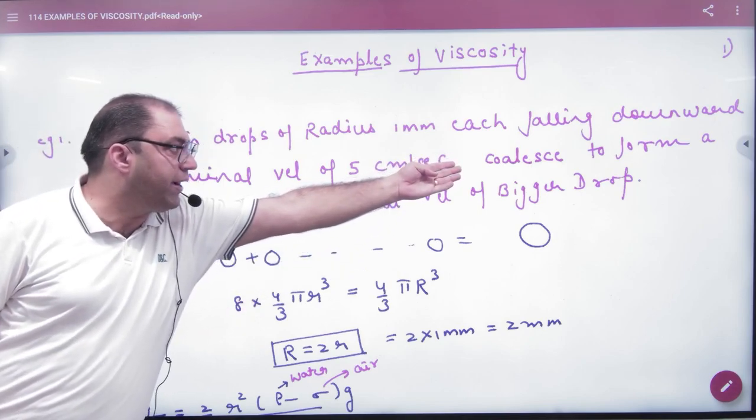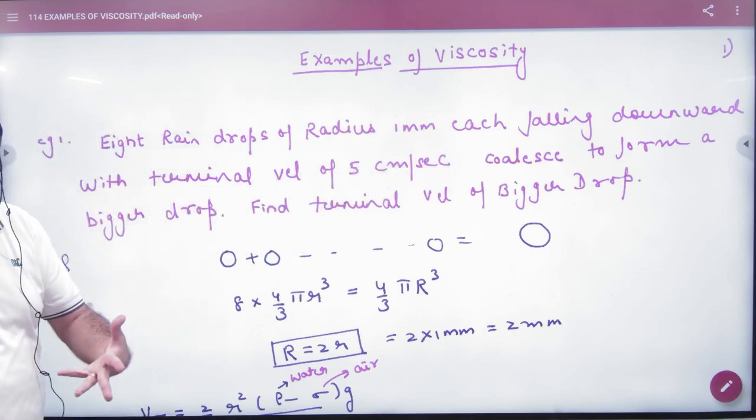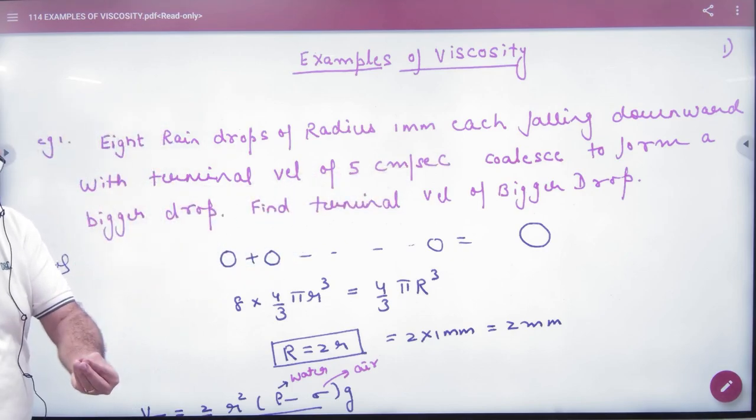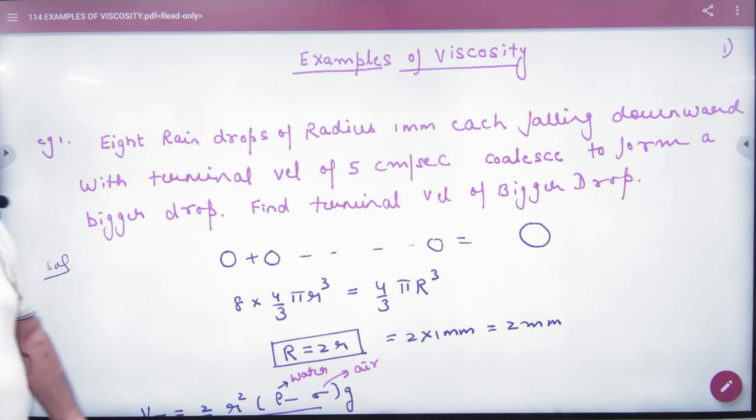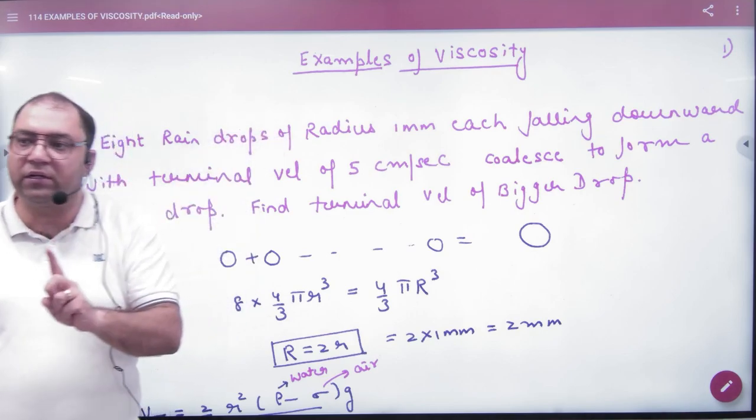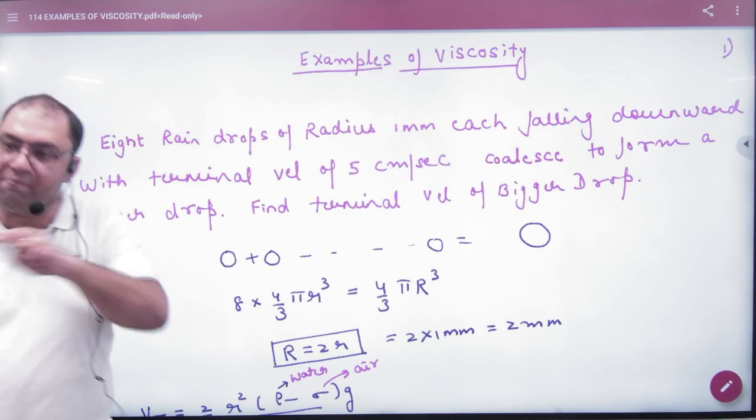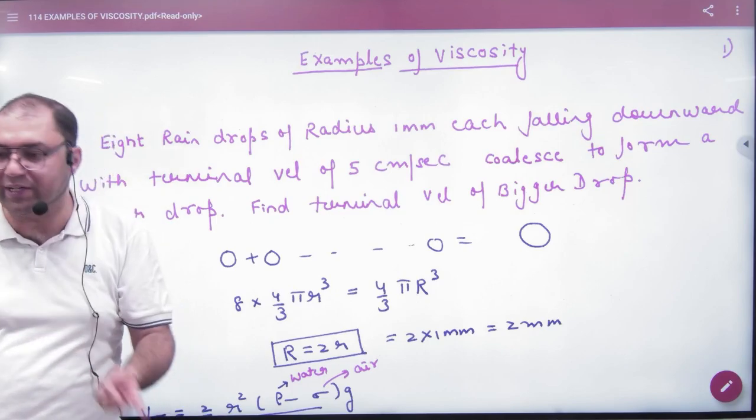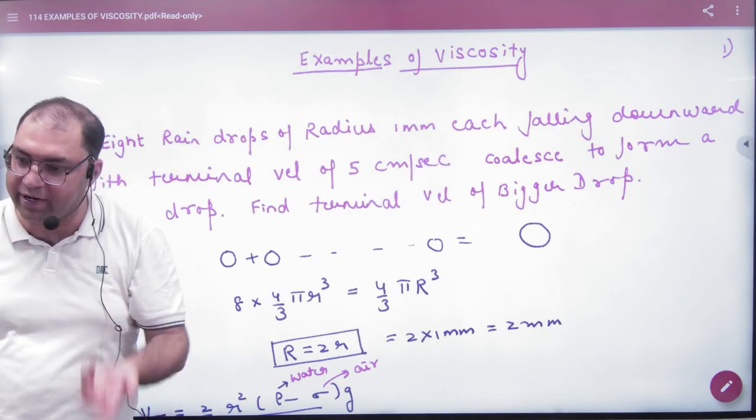So the small drops combined become a big drop. Find the terminal velocity of bigger drop. Remember that when liquid drops combine, volume equates. So first of all, find the radius of the big drop.